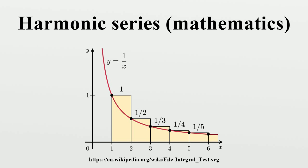The harmonic series diverges very slowly. For example, the sum of the first 10^43 terms is less than 100. This is because the partial sums of the series have logarithmic growth. In particular...